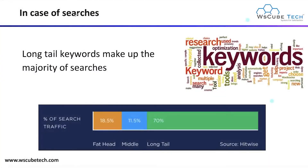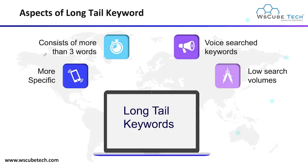In case of searches, long tail keywords make up the majority of searches. Looking at the next aspect of long tail keywords — what makes them more effective: they are more specific keywords, they consist of more than three words, and they include voice search keywords.